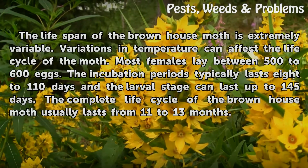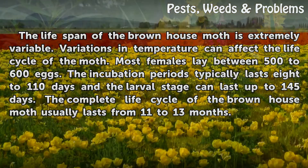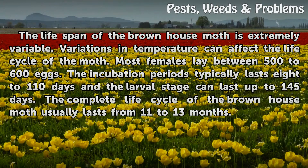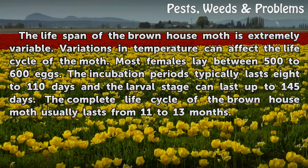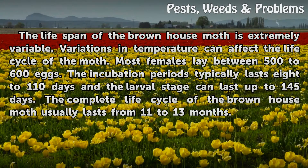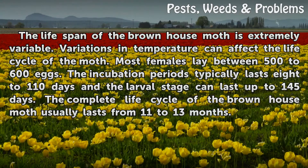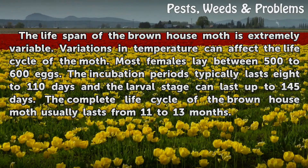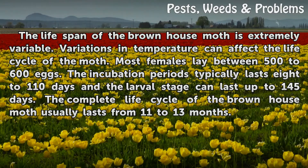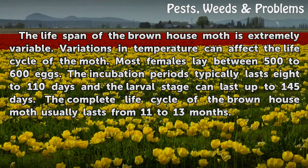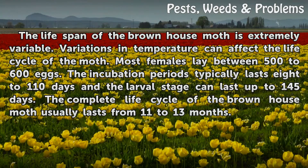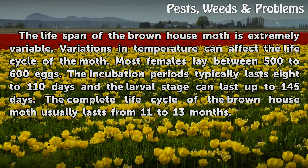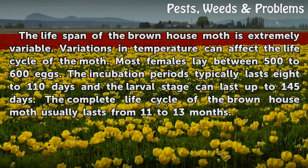The lifespan of the brown house moth is extremely variable. Variations in temperature can affect the life cycle of the moth. Most females lay between 500 to 600 eggs. The incubation period typically lasts 8 to 110 days, and the larval stage can last up to 145 days. The complete life cycle usually lasts from 11 to 13 months.